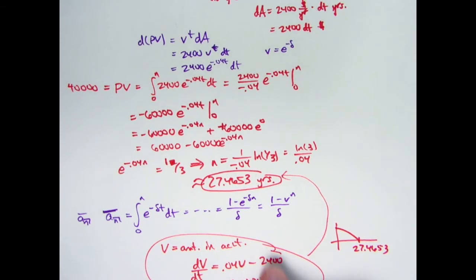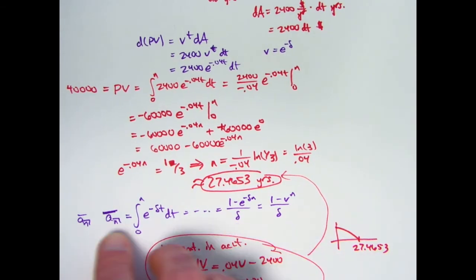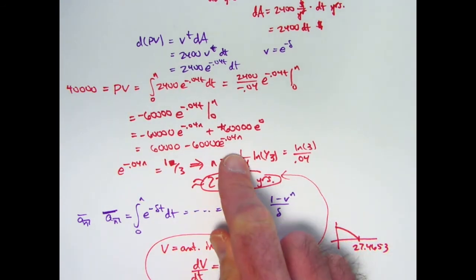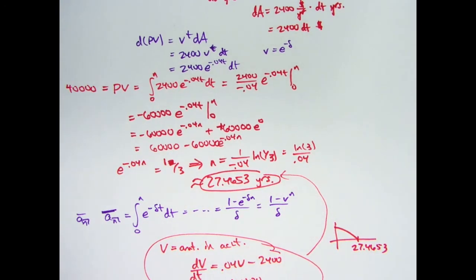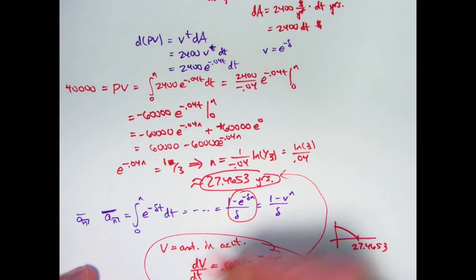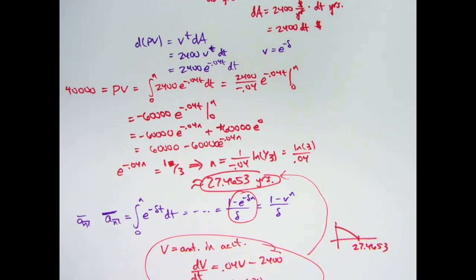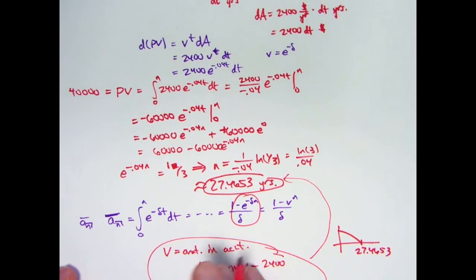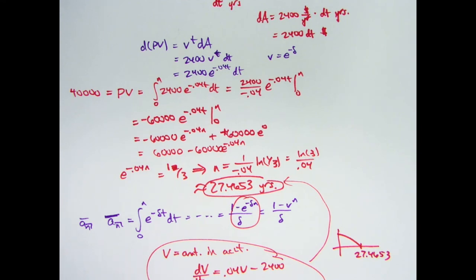But once we have this formula for this present value, you wouldn't have to redo this integral like I did. You could just use this formula right away along with the payment of 2400 and the present value of 40000 to solve the problem without doing an integral.